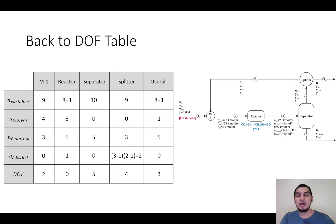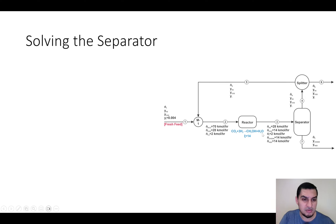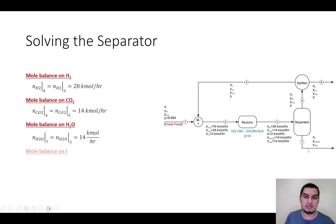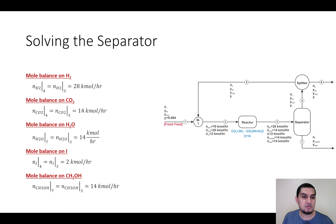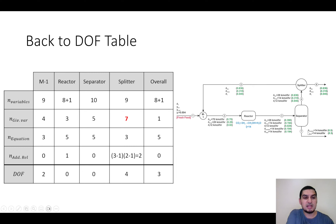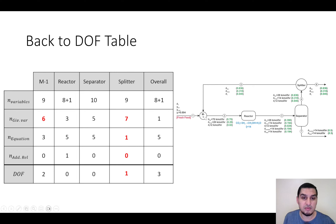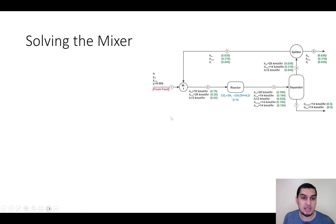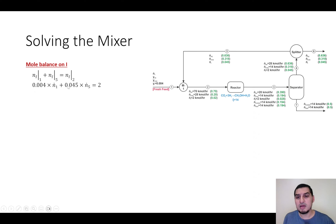Adding five pieces of information to the separator makes it solvable. The separation is straightforward: 28 kmol/hr of H₂, 14 of CO₂, and 2 of inerts go to the top stream (stream four), while the 14 of methanol and 14 of water go to the bottom stream (stream seven). Stream four gives two pieces of information to streams five and six via the splitter restriction, and we can use this to solve the mixer by writing balance equations on each component.